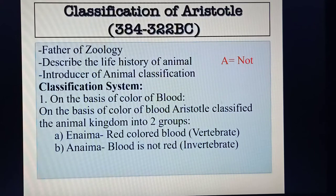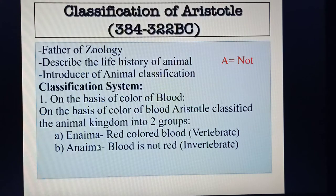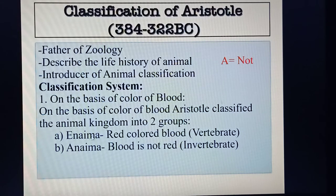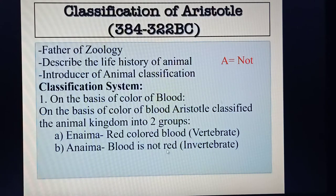The classification system of Aristotle: first, on the basis of color of blood. Aristotle classified the animal kingdom into two groups — Enaima and Anaima. Enaima are animals whose blood is red-colored, and they are vertebrates. Anaima are animals whose blood is not red-colored, and the example is invertebrate animals.